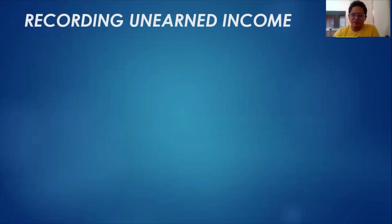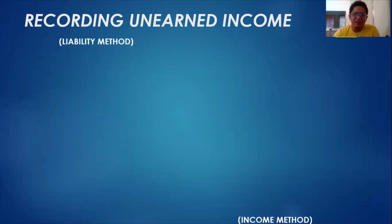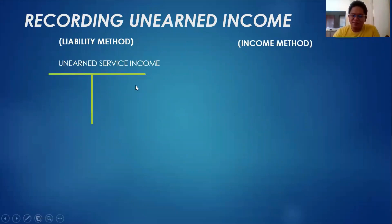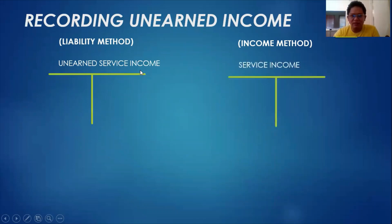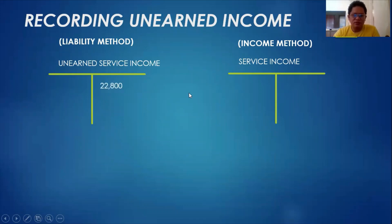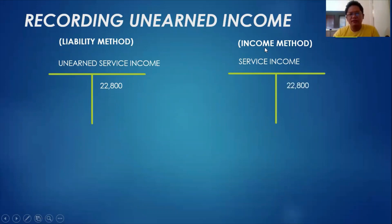Unearned income has two methods of recording: one is the liability method and another is the income method. Under the liability method, the whole amount is recorded under a liability account — unearned service income. Under the income method, the whole amount is recorded under service income. So the whole 22,800 is recorded as a liability once received under liability method, or all 22,800 is recorded as service income regardless if it's not yet earned under the income method.